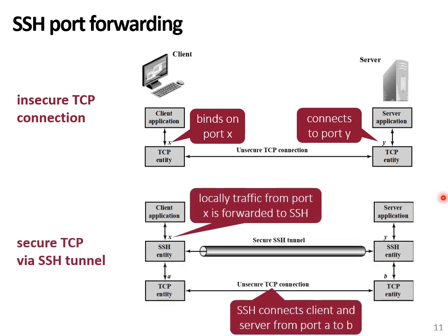Using SSH, we can intercept this traffic. We can create an SSH tunnel that binds on a local port X and a remote port Y, and then forwards all the traffic transmitted to X towards Y, sending it over a secure SSH connection.